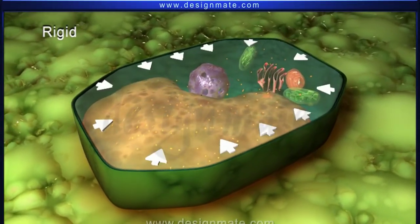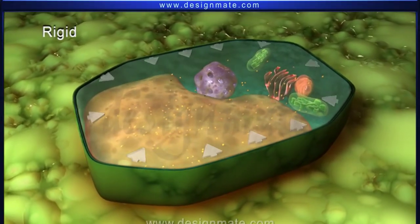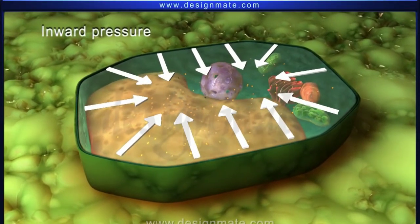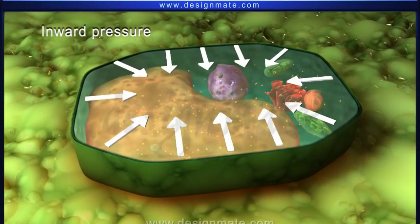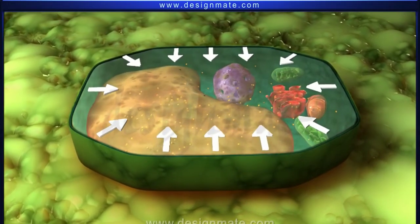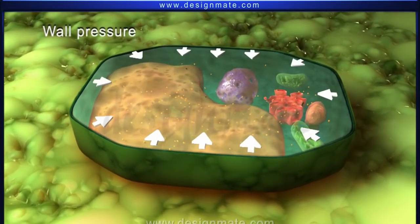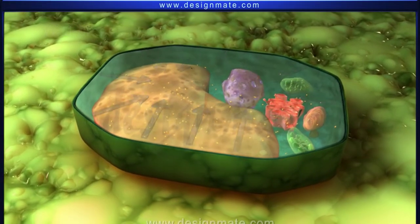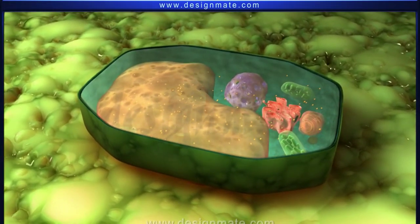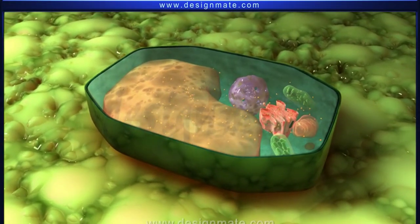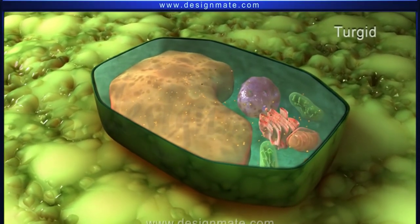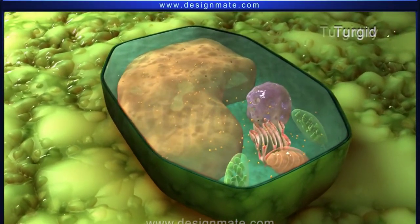This inward pressure exerted on the fluid contents of the cell by the cell wall is called wall pressure. Such a cell swollen due to absorption of water, with its walls in a state of tension, is said to be turgid, and the condition is called turgidity.